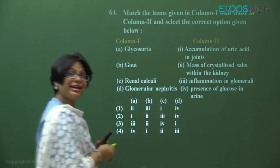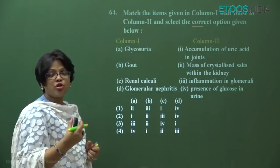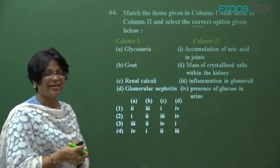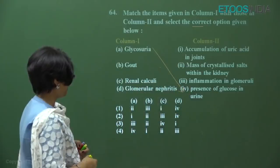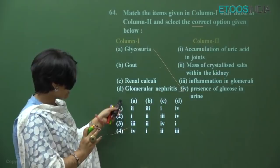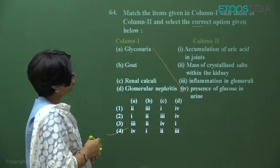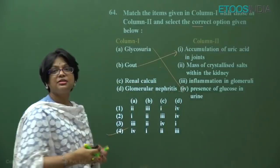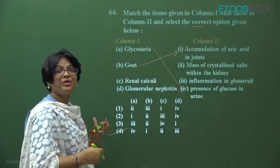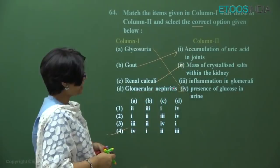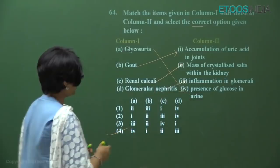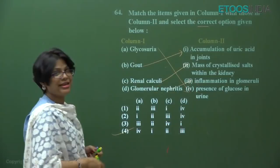Question number 64: match the kidney disorders. Glycosuria — glucose in urine — A is four. Gout — accumulation of uric acid in joints — B is one. Renal calculi — kidney stones, crystallized salts like calcium carbonate and calcium oxalate — C is two. Glomerulonephritis — inflammation of glomeruli (-itis = inflammation) — D is three. Answer is option number four.